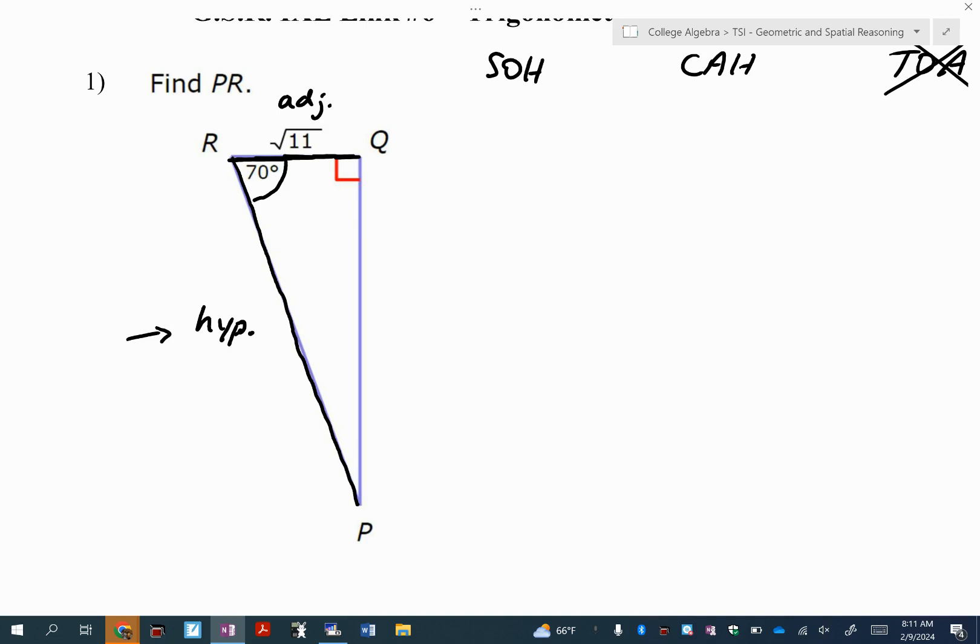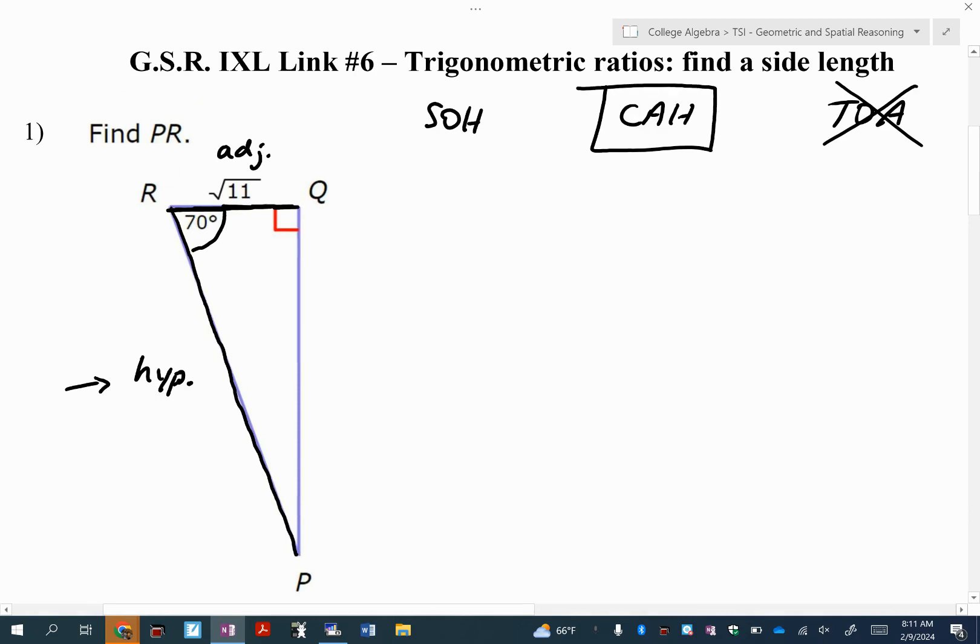So which of these, SOHCAH or CAH, am I going to use to solve this problem? If I have the adjacent side and I'm trying to find the hypotenuse, the CAH, not CAHCAH, just CAH.